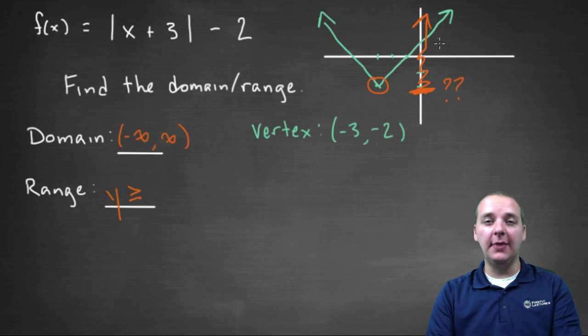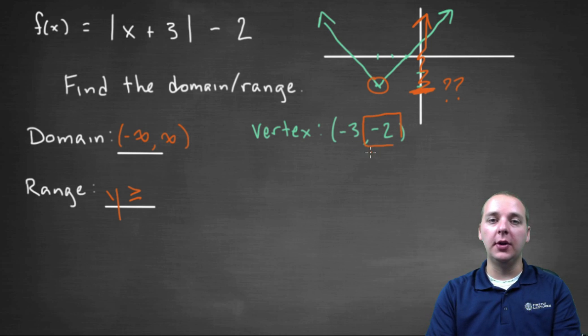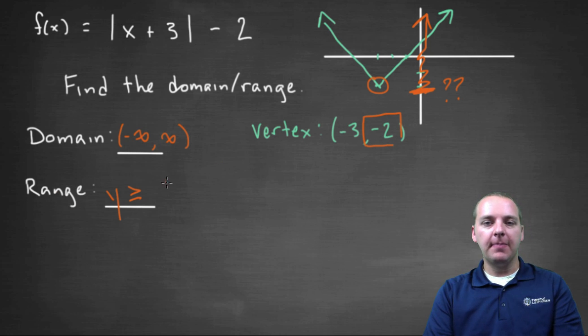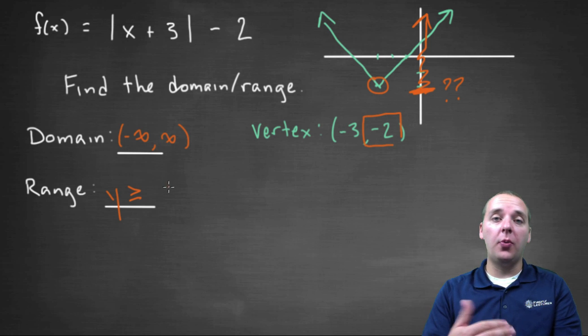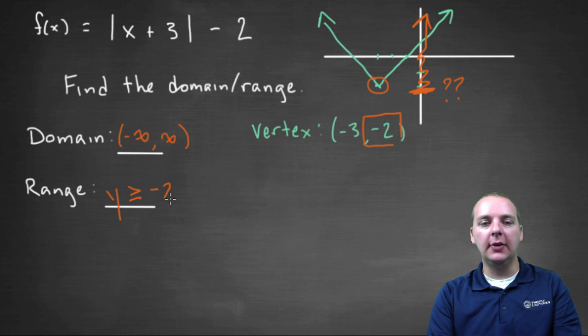And so, like I said, even without the graph, you can just think about where the vertex is. In this case, negative two. Negative three comma negative two. But I'm concerned about the Y value, obviously, being that this is the range. And so the range will be all the Y values above or greater than negative two. So that will be your final answer.